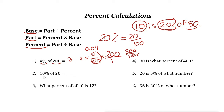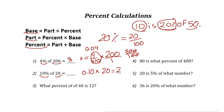Next example: 10% of 20. Write 10% as 0.10 or 0.1. The percent and the base are both provided, so we're looking for the part. Part equals percent times base: 0.1 times 20. Use your calculator — the answer is 2. So 10% of 20 is 2.